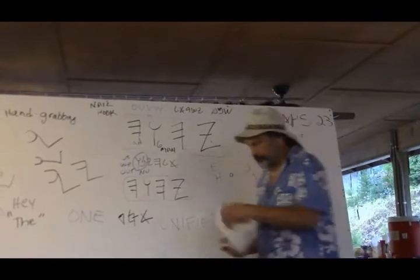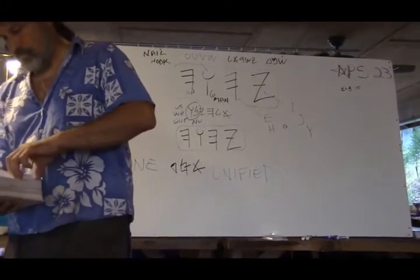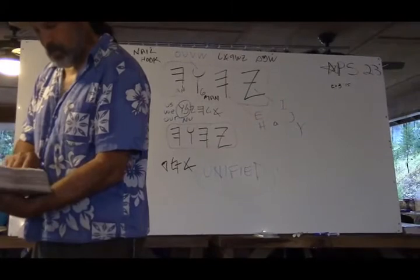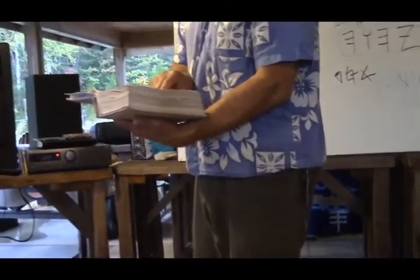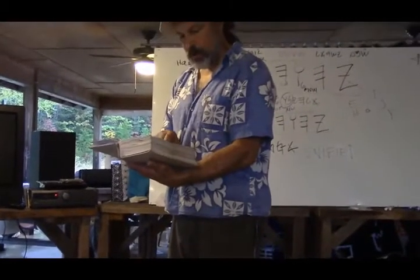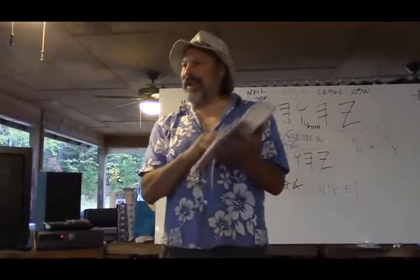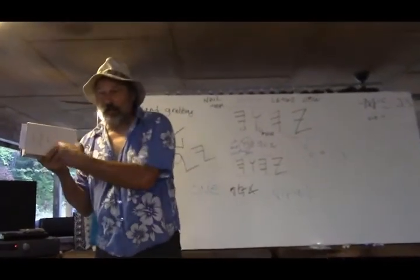In Exodus 20 verse 24, I believe it is, right after the giving of the Ten Commandments, this guy says - does somebody want to read it? Does somebody have Exodus 20:24? Verse 21: 'An altar of earth shall you make for me and you shall slaughter upon it your burnt offerings and your peace offerings, your flock and your herd. Wherever I permit my name to be mentioned, there I shall come to you and bless you.' Now if somebody doesn't want to mention his name, they don't have to. But he said...